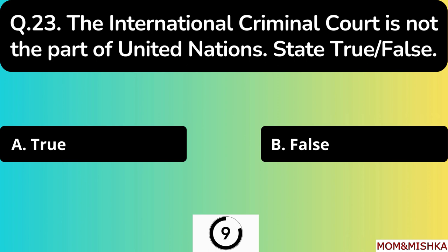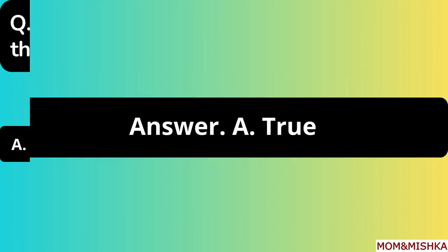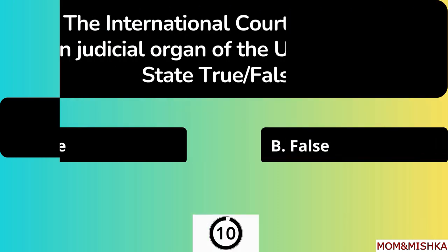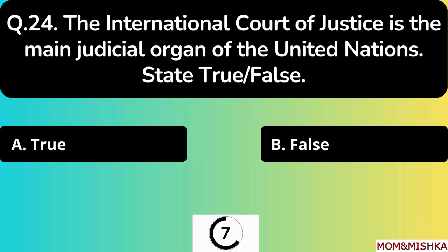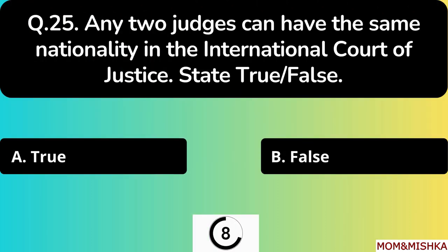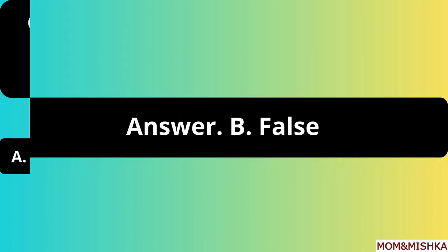The International Criminal Court is not part of the United Nations — state true or false? It's true — option A. The International Court of Justice is the main judicial organ of the United Nations — state true or false? It's true — option A. No two judges can have the same nationality in the International Court of Justice — state true or false? It's false — option B.